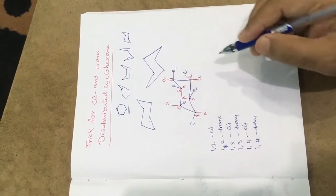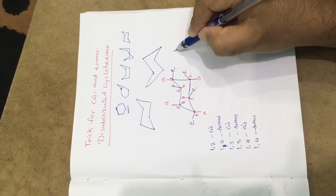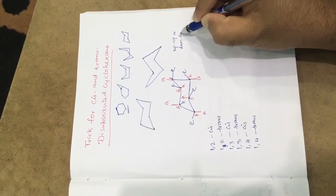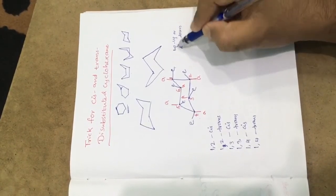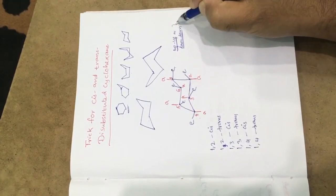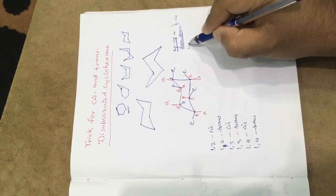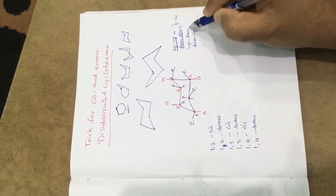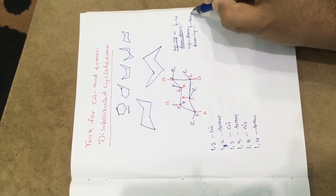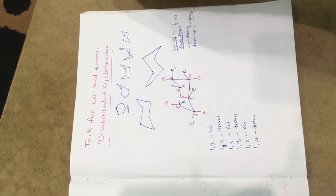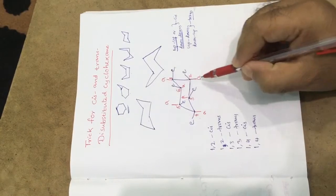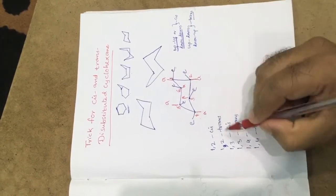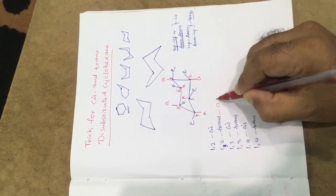Here is the easy trick: up-up or down-down means same direction, which indicates cis. Up-down or down-up means opposite direction, which indicates trans. So for the 1,2 position: axial up and axial down — that is up and down — is trans. So axial-axial in the 1,2 position is trans. Similarly, equatorial-equatorial in the 1,2 position is also trans.